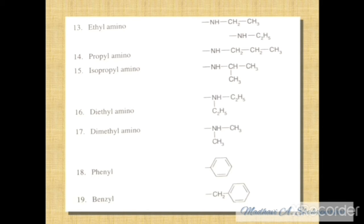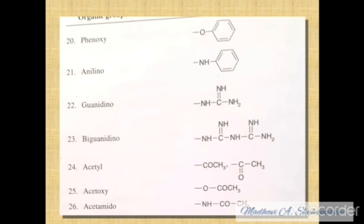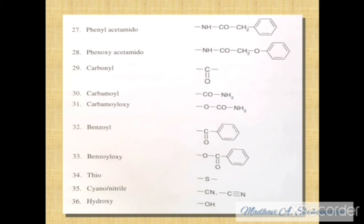Next: ethylamino — amino group with ethyl C2H5, NH. Propylamino, isopropylamino, diethylamino, dimethylamino, phenyl ring, benzyl, phenoxy (phenyl ring with oxygen), anilino (NH), guanidino (N=C double bond, NH, NH2), biguanidino, acetyl COCH3, acetoxy O-COCH3, acetamido NH-COCH3, phenylacetamido (phenyl ring with l-acetamido), phenoxyacetamido (phenoxy with extra oxygen factor), carbonyl (C=O), carbamoyl C-O-NH2, carbamoyloxy O-C-O-NH2, benzoyl, benzoyloxy, thio, thioacyl sulfur, cyano or nitrile CN.